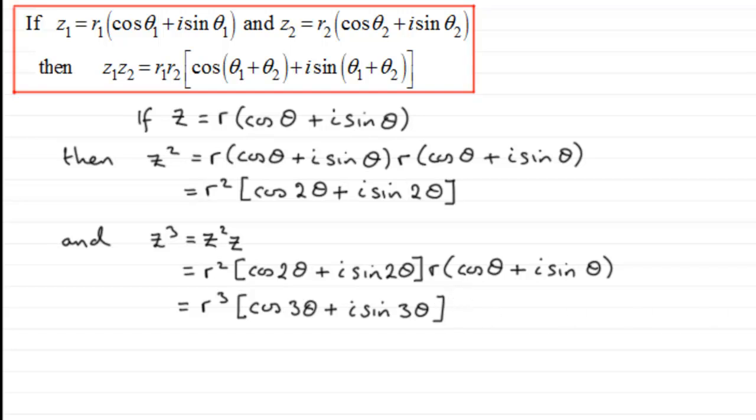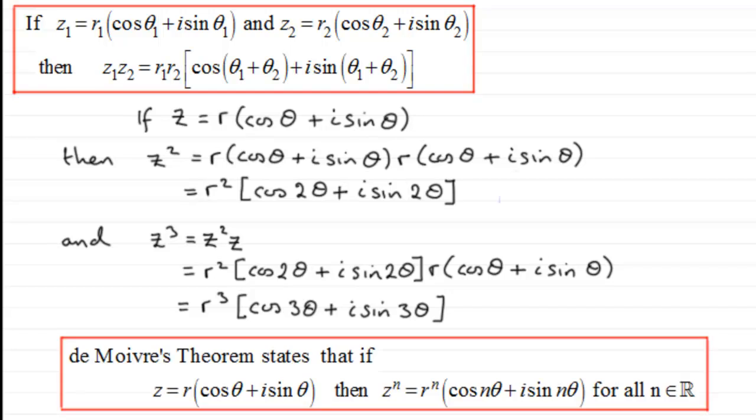So what this leads on to is this general result known as De Moivre's Theorem. De Moivre's Theorem states that if Z equals R multiplied by cos θ plus i sin θ, then Z to the power of n equals R to the power of n multiplied by cos nθ plus i sin nθ for all n. But what he goes on to demonstrate is it's not just true for all positive integers like I've given you in these examples here, but in fact it's true for all n where n is any real number.